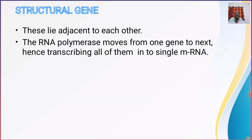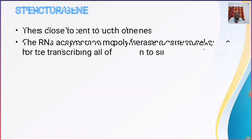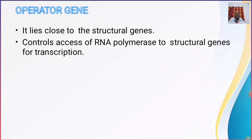The structural genes lie adjacent to each other, and the RNA polymerase, which moves from one gene to the other, transcribes all of these structural genes into a single mRNA. The structural genes are followed by the operator gene, which lies close to the structural genes.